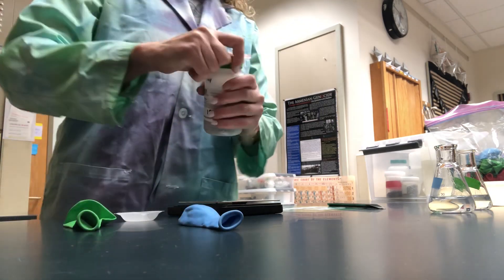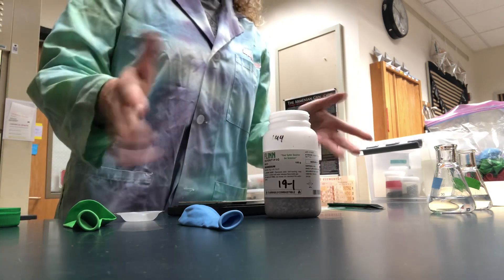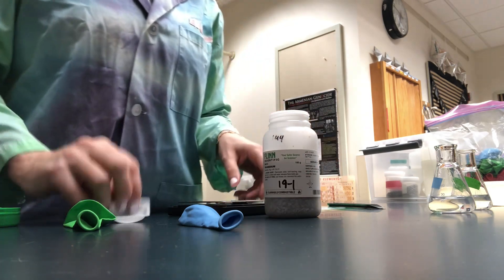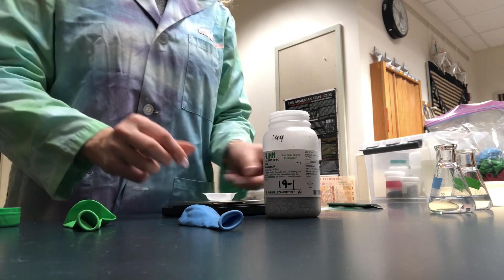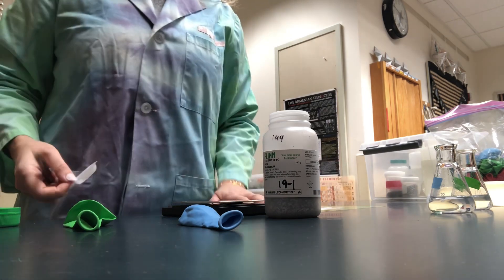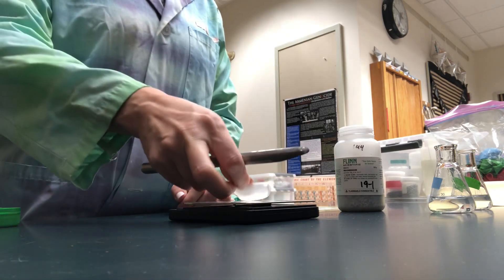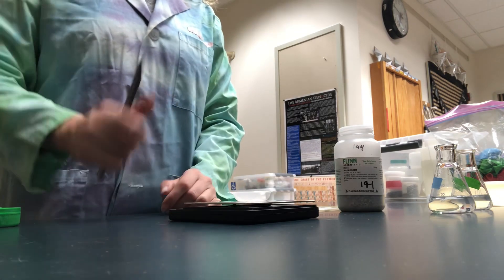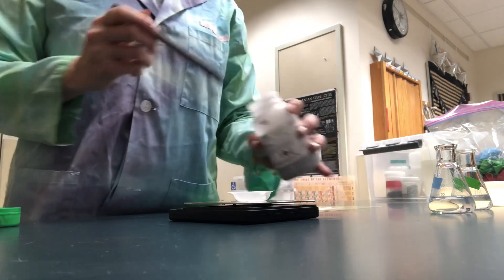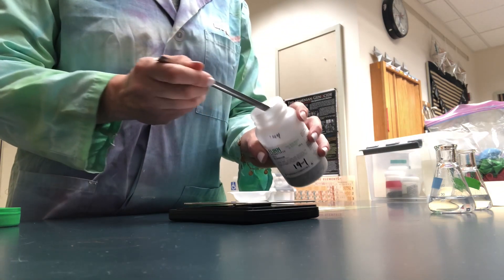For balloon A, we're going to use about 0.15 grams. I'll take my weigh boat, turn on my scale, my electronic balance, put my weigh boat on here, press tare to remove the weight of the weigh boat, and weigh out about 0.15 grams.